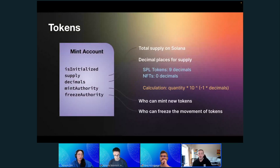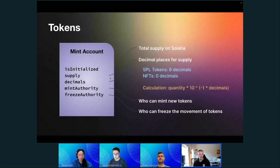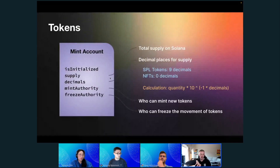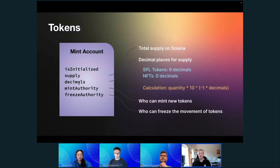Going back to tokens — the authorities are pretty straightforward. Mint authority is the one who can mint new tokens, who can introduce new tokens into the supply. Freeze authority is the one who can freeze the movement of tokens, meaning they can't be transferred, more can't be created — everything is frozen in place.